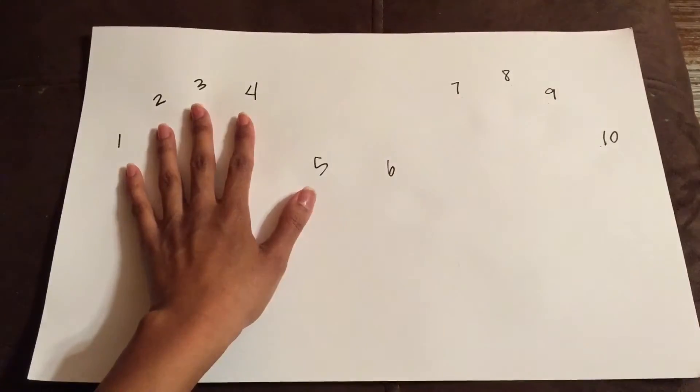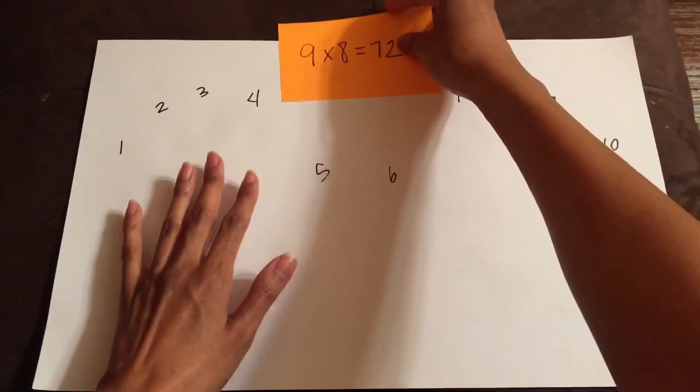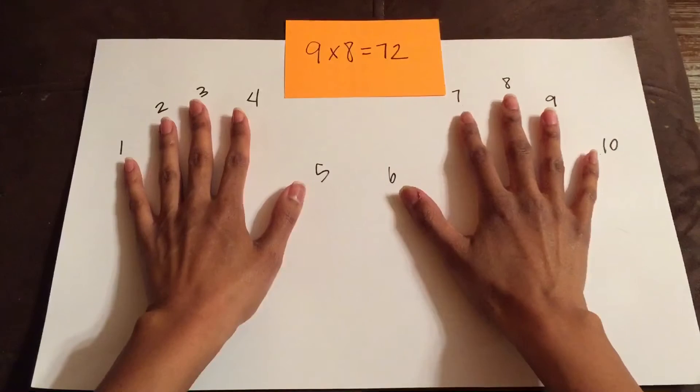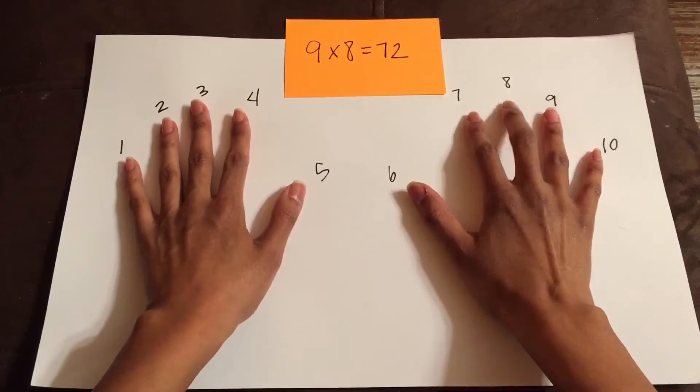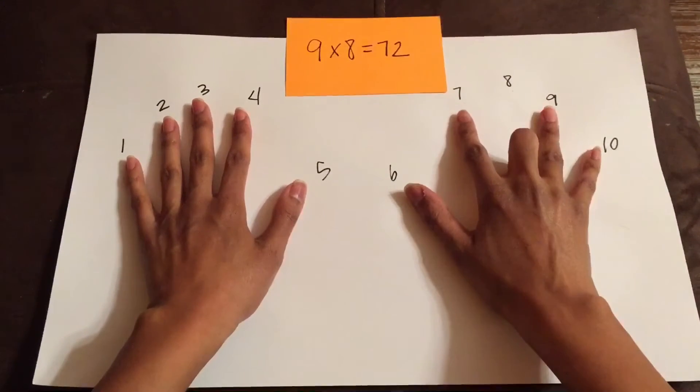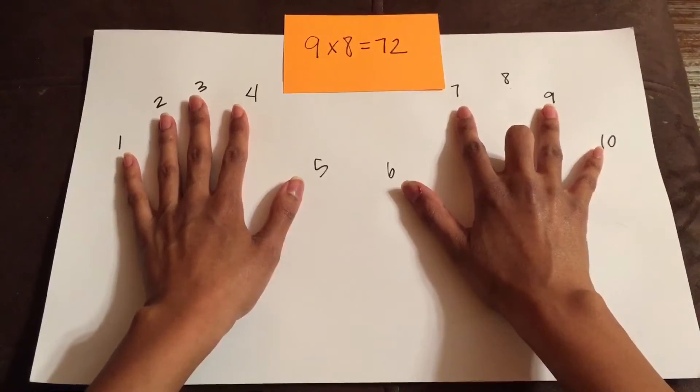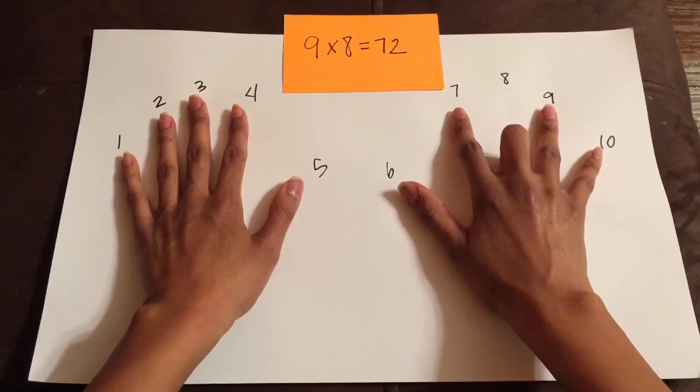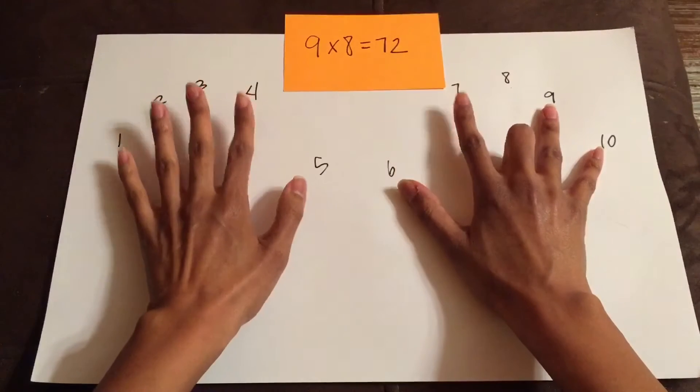If I were to say, I'm going to multiply 9 times 8, all I need to do is hold down my 8th finger. And then I look to the fingers on the left side of that 8th finger, and I would see that I have 7 fingers up.